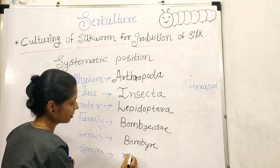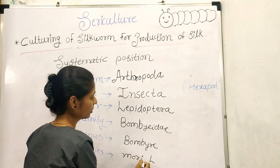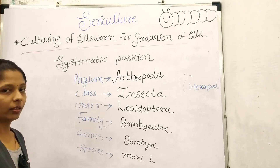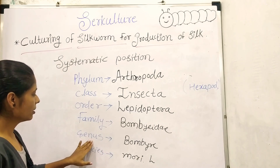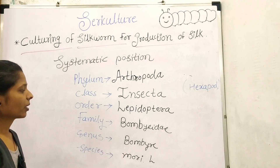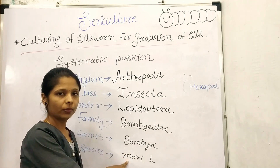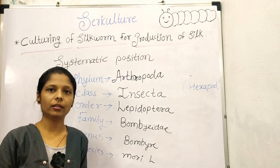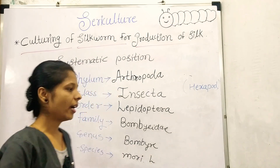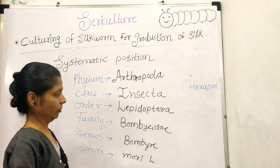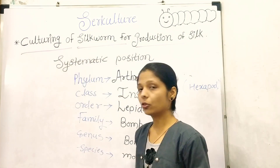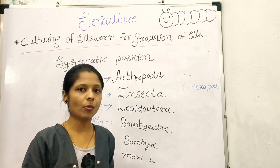The genus is Bombyx and the species is mori, given by Linnaeus. Keep in mind that the first letter of the genus should be written in capital form, while the first letter of the species is always written in small form. These are the rules and regulations of binomial nomenclature.